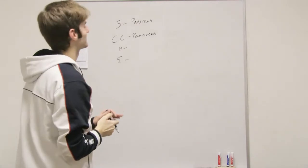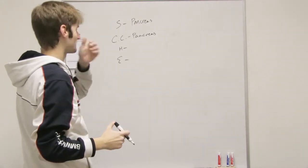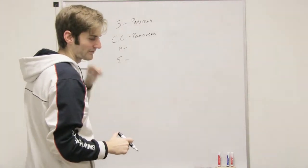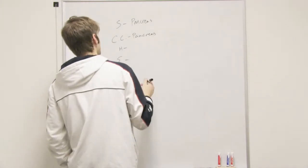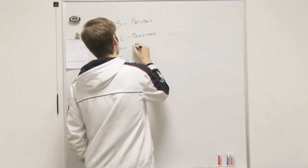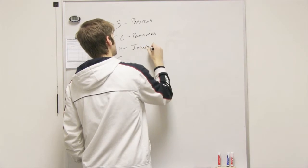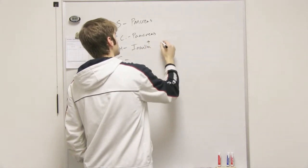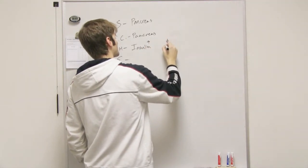Now the pancreas puts out two different hormones depending on what level the blood sugar is at, if it's too high or too low. If it's too high, it puts out insulin. If it's too low, it puts out glucagon.